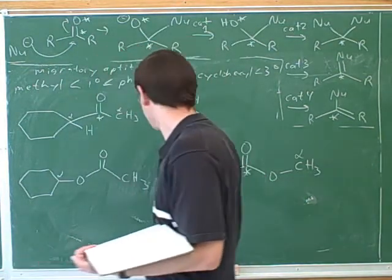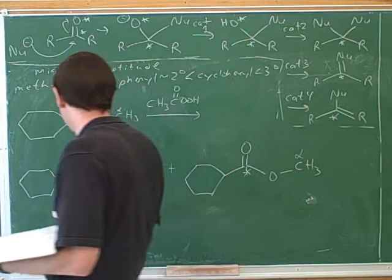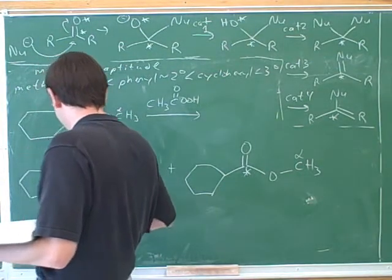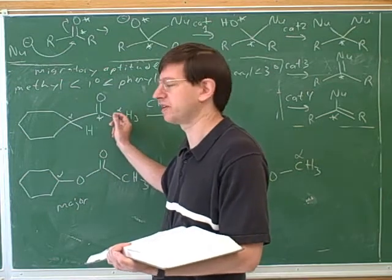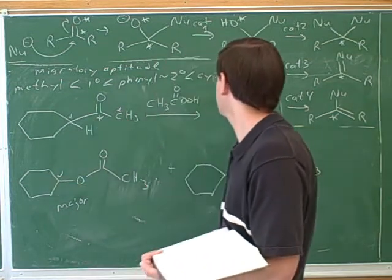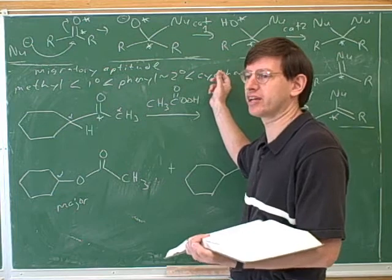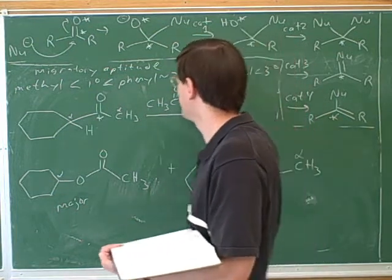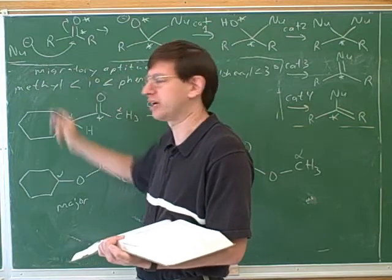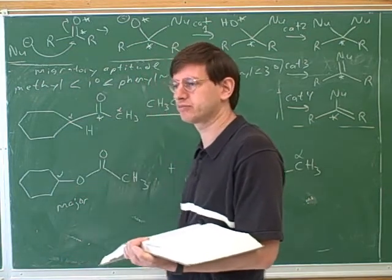Okay, so it looks like you guys got the right products. It looks like you both are preferring this as the major product, because here this alpha carbon is more substituted than this alpha carbon over here. Actually, this has a special entry in the textbook. This would be a cyclohexyl ring. They said that a cyclohexyl ring is certainly going to have more aptitude than a methyl over here. So this would be our major product. Good?